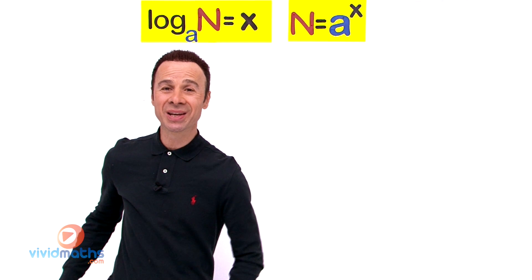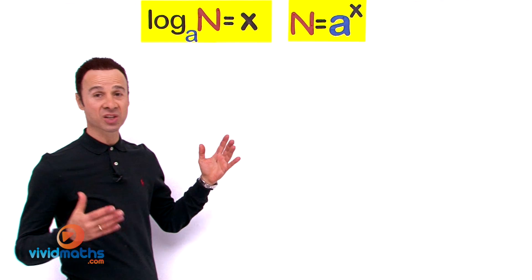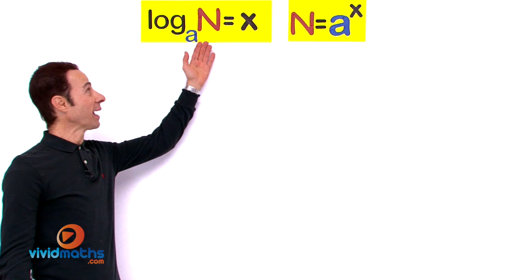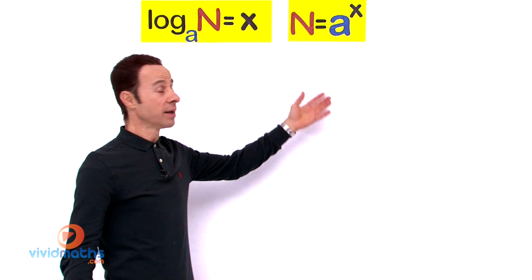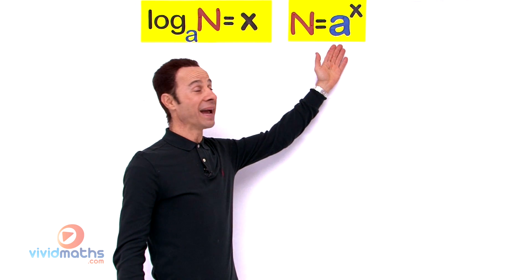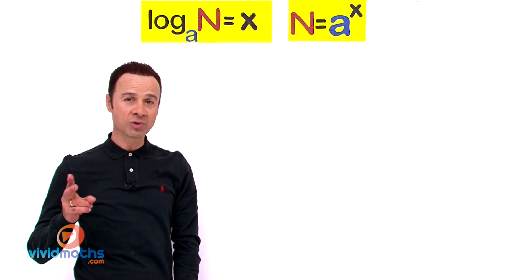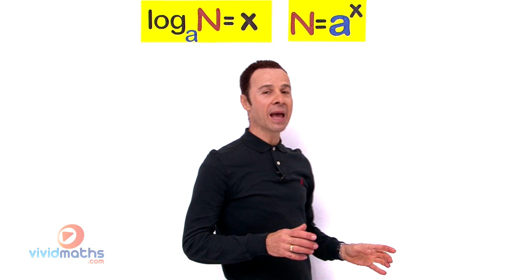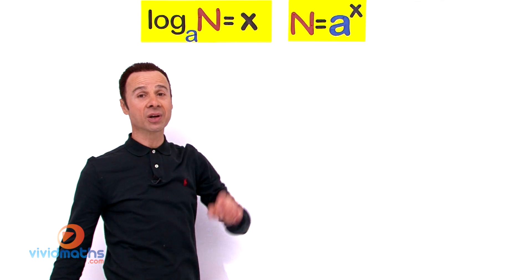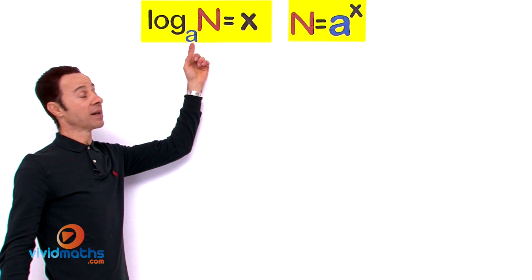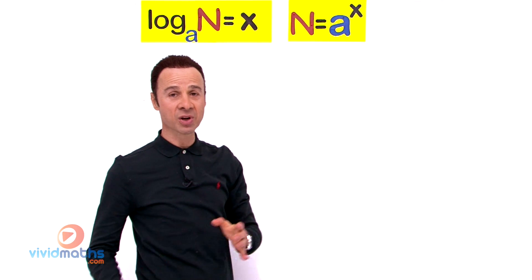Let's work with the missing base from a logarithmic equation. We have a logarithmic expression such as log base a of n equals x the exponent, which transforms into exponent form: n equals a to the power of x. In these examples, the power will be a fraction, and what we are looking for is the missing base — that 'a' down below. That's our variable.